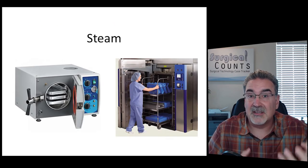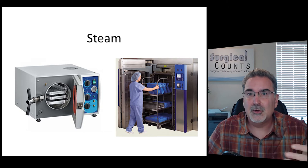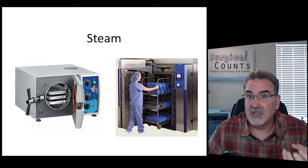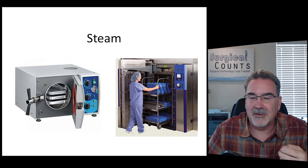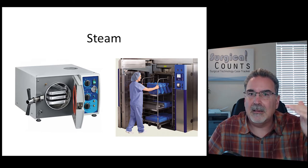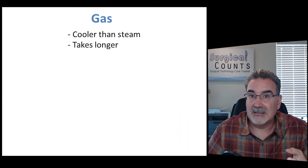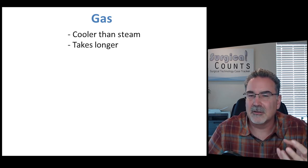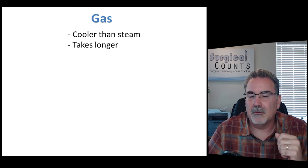Steam is great and sterilizes really well. The problem is the temperature tends to be very high — up to 270 degrees. If you're using things like plastic, those materials are going to melt or at least soften or change their shape at temperatures around 270 degrees, so steam might not be the best choice for those. We have to find a way to sterilize those items at a lower temperature, and that's where certain chemical gases can be used. Certain chemical gases can sterilize instruments at temperatures lower than steam, protecting plastic and other heat-sensitive materials, though they do tend to take a little bit longer.